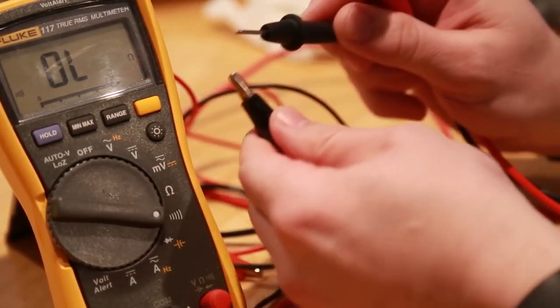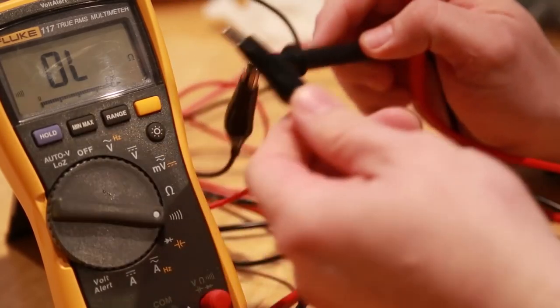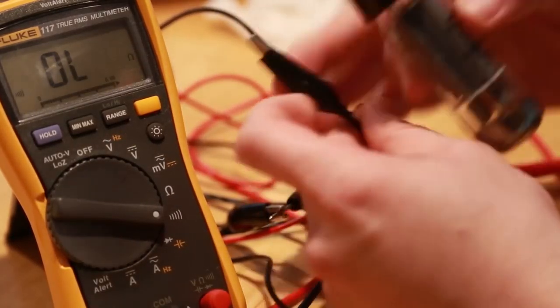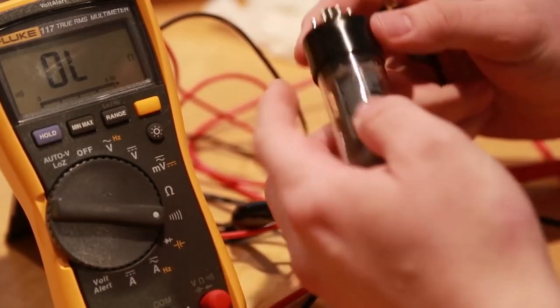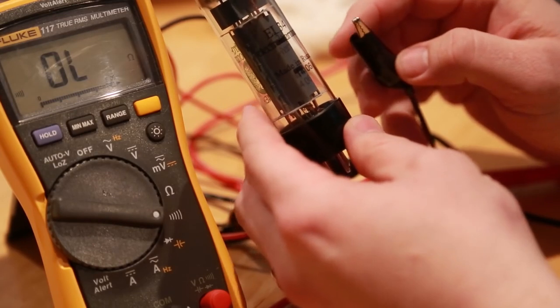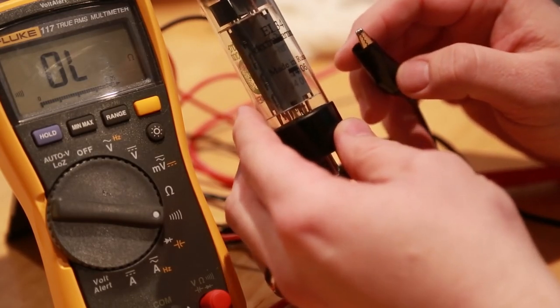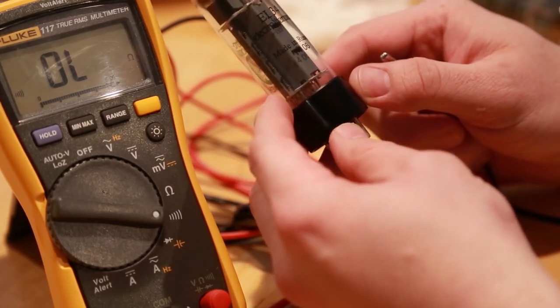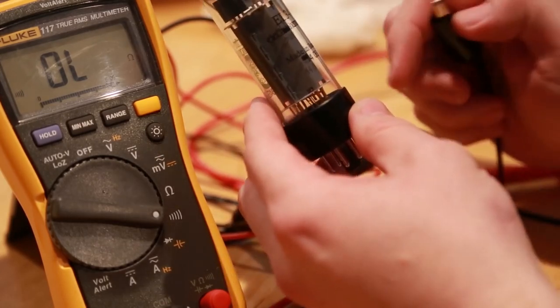For this use I'm going to put a small alligator clip on one, just makes it easier for me to connect to the tubes. If you take for example this power tube, this is an EL34, you'll need to look up the data sheets and we'll show the data sheets for each of these tubes.